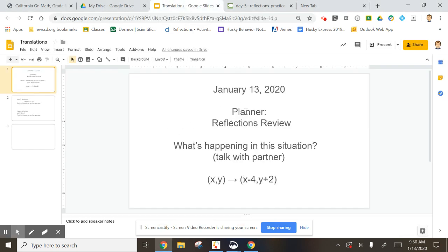Okay guys, this is your planner this morning. You're going to write 'reflections review' in there, and then what's happening in the situation. Hopefully you already talked about what's happening with the situation. If we're going from (x,y) to (x-4, y+2), this is a translation because you see a minus and a plus. You're adding or subtracting, and this is left four.